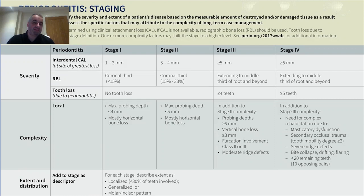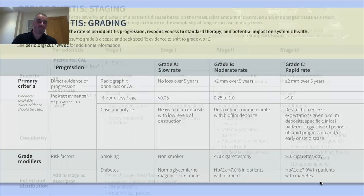The World Workshop presented a staging table in Amsterdam to determine how severe the periodontal disease is. However, we struggled to translate this into the UK environment. For example, the table requires measuring interdental clinical attachment loss — a great research tool, but not something we ask general practitioners to do in the UK. We ask for pocket measurements and bleeding scores.